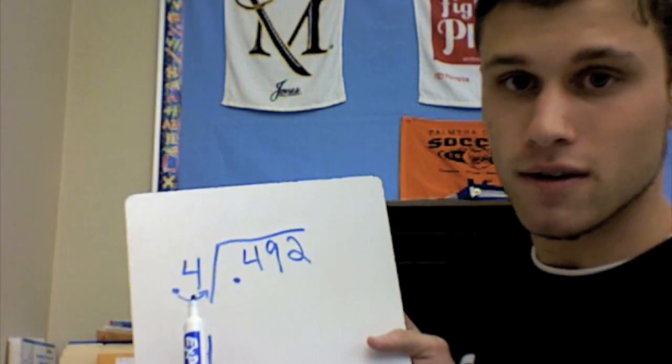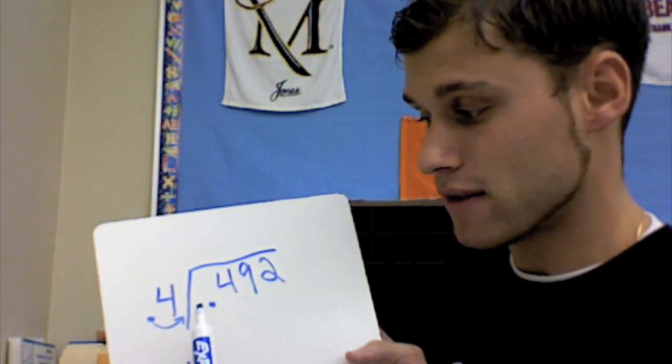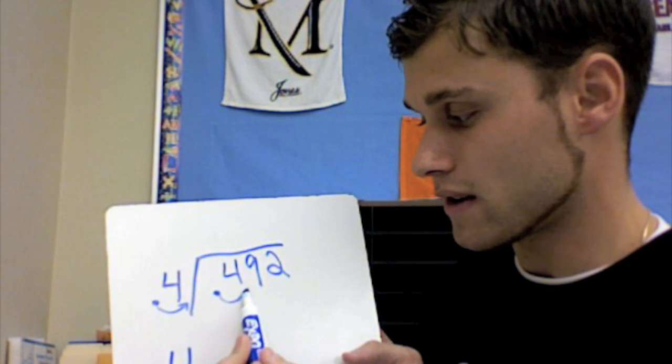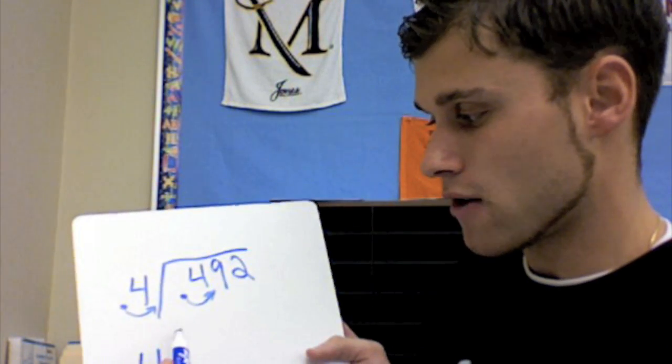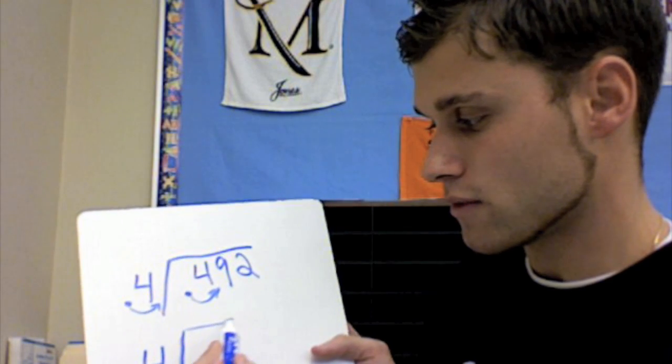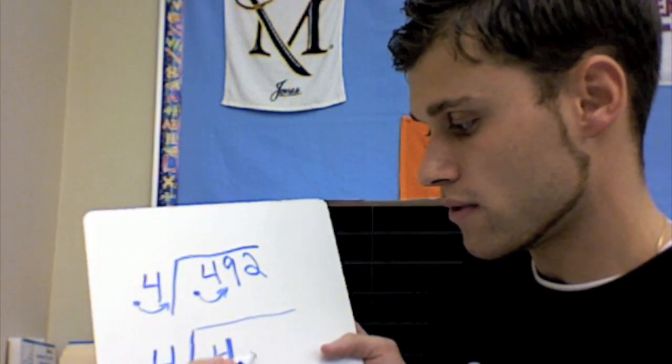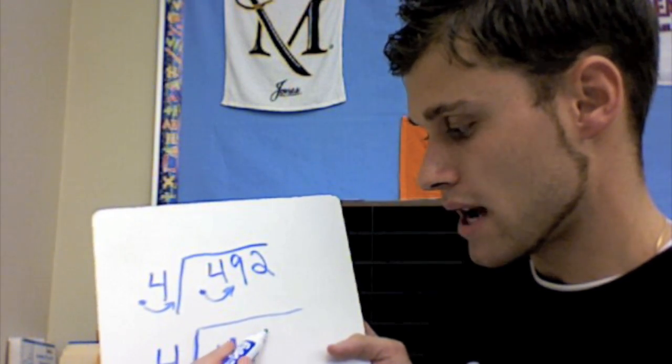Now, whatever we do on the left side of our house for dividing, we have to do on the right side of our house. So we're going to move that decimal over to the right. And now our new number on the inside of the house will become 4.92.